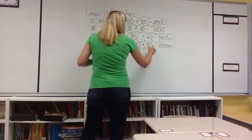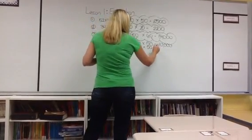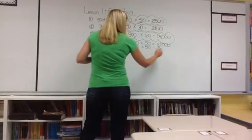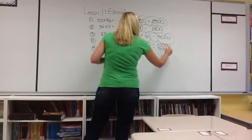Let's say 100 times 50. 1 times 5 is 5, so 100 times 50 is 5,000.